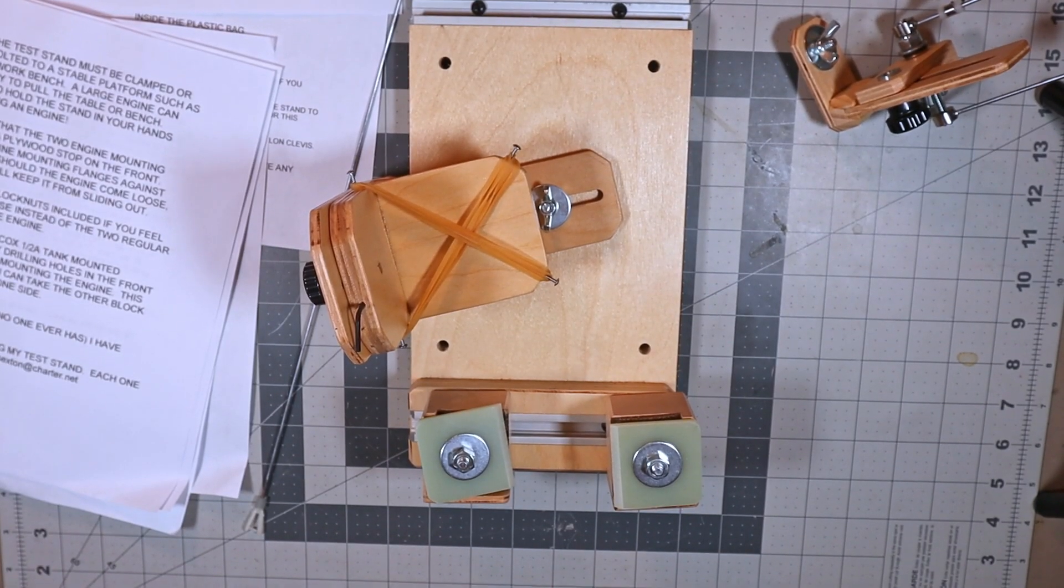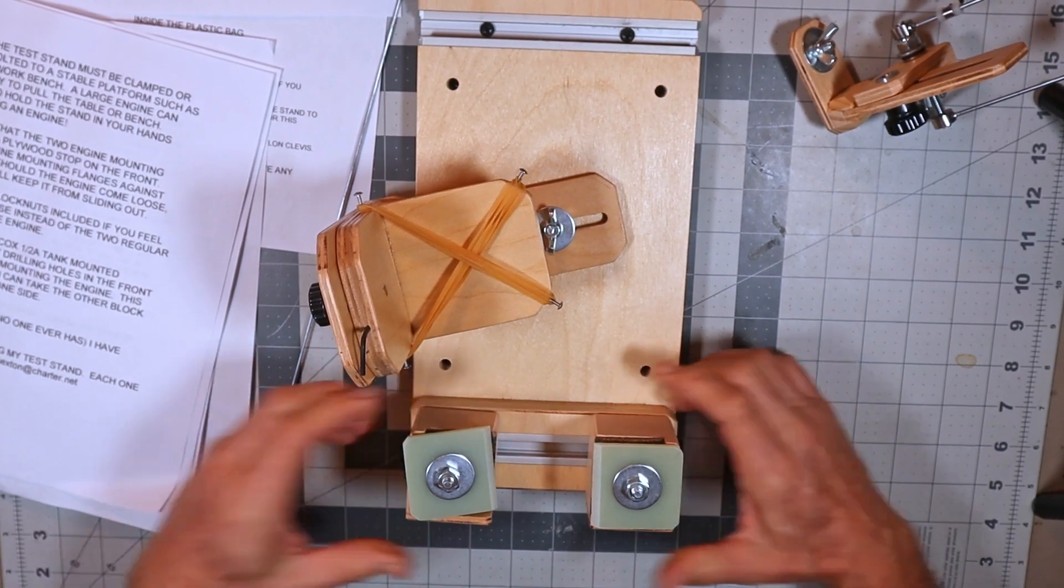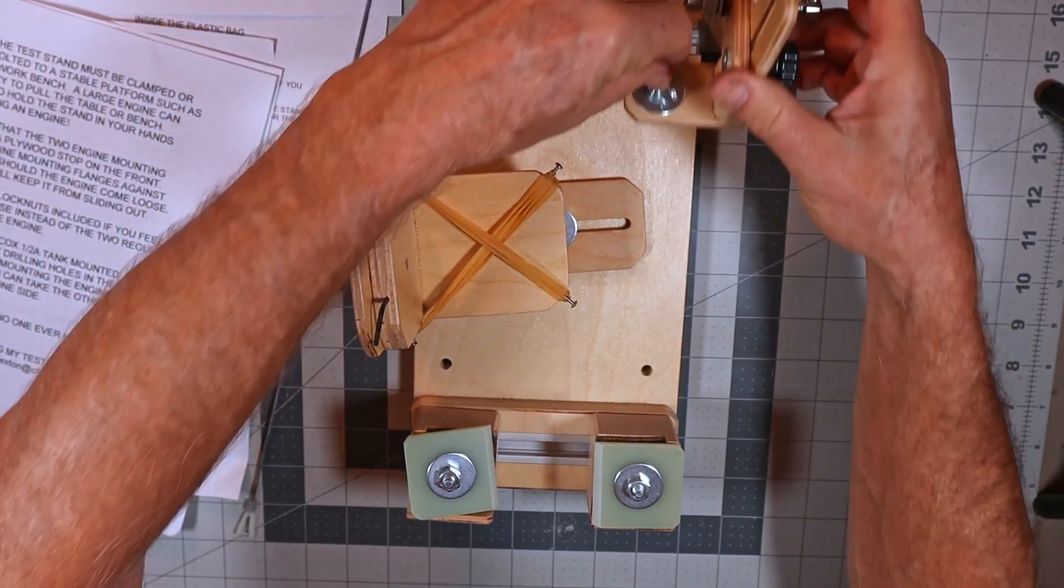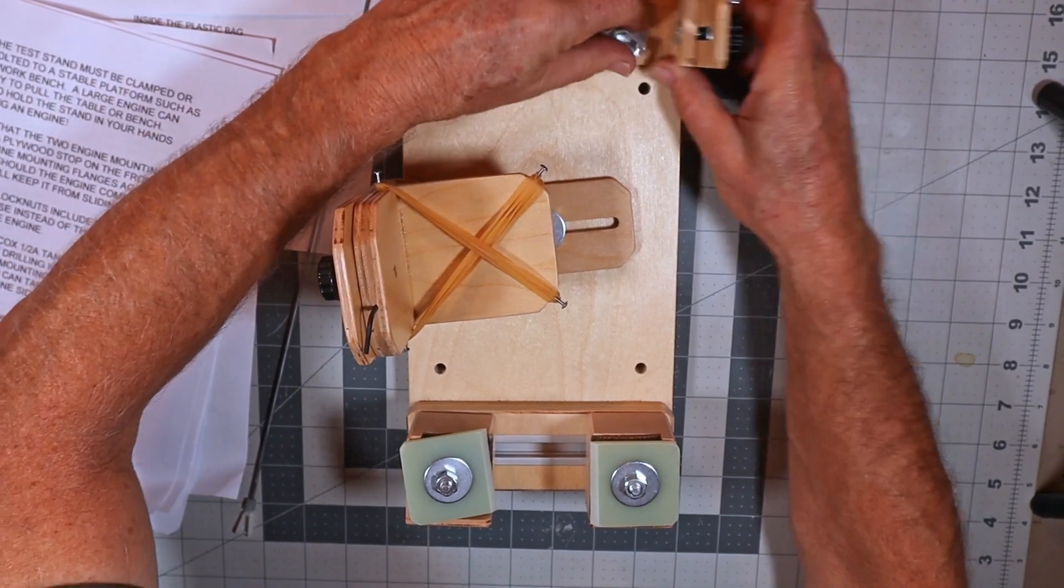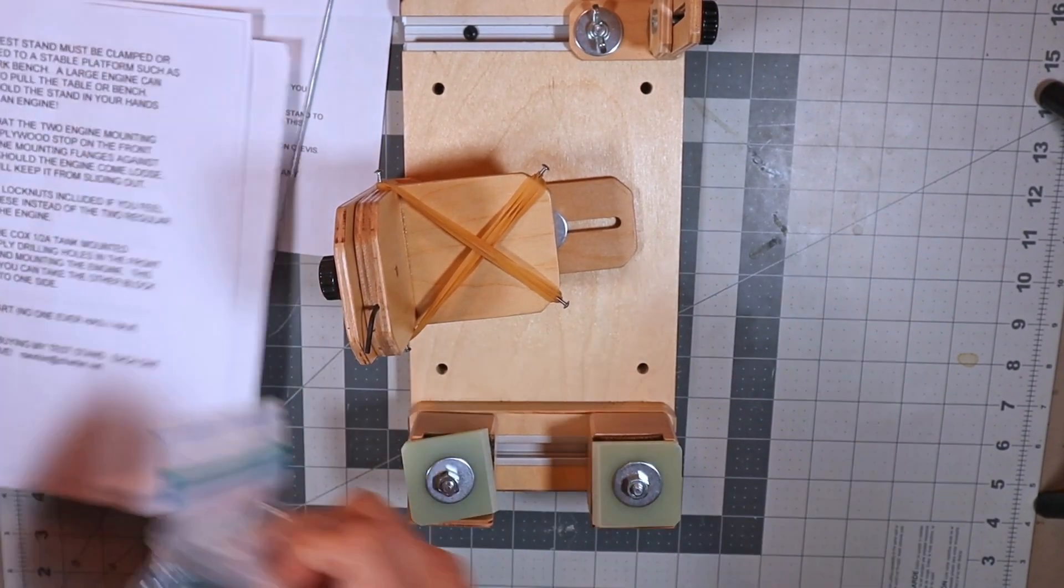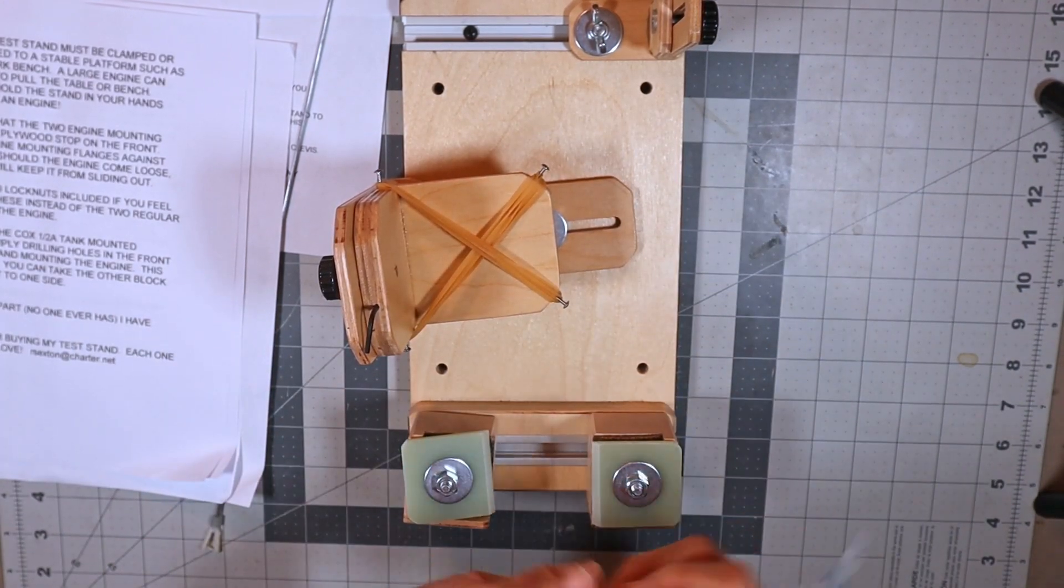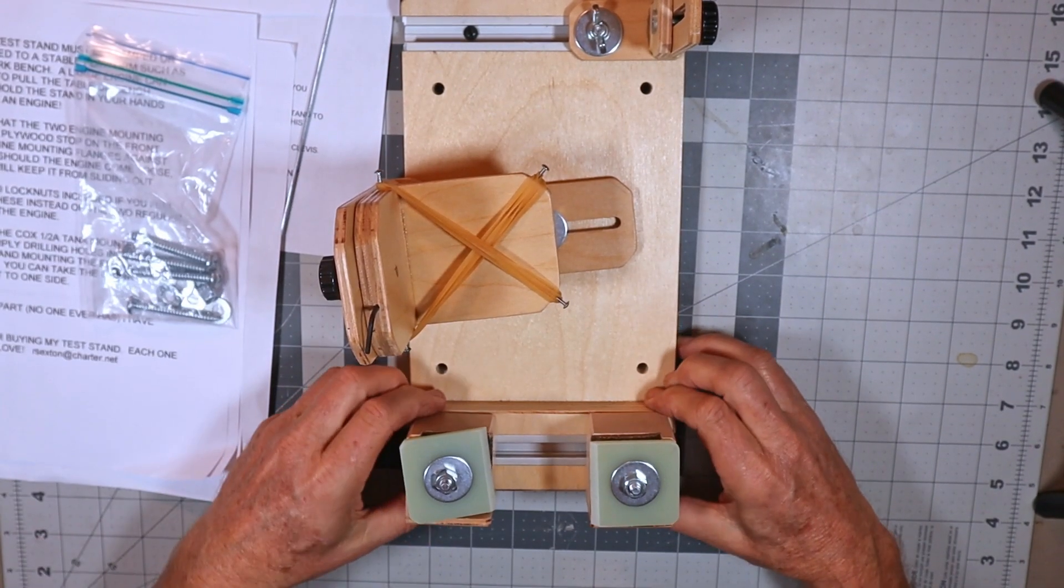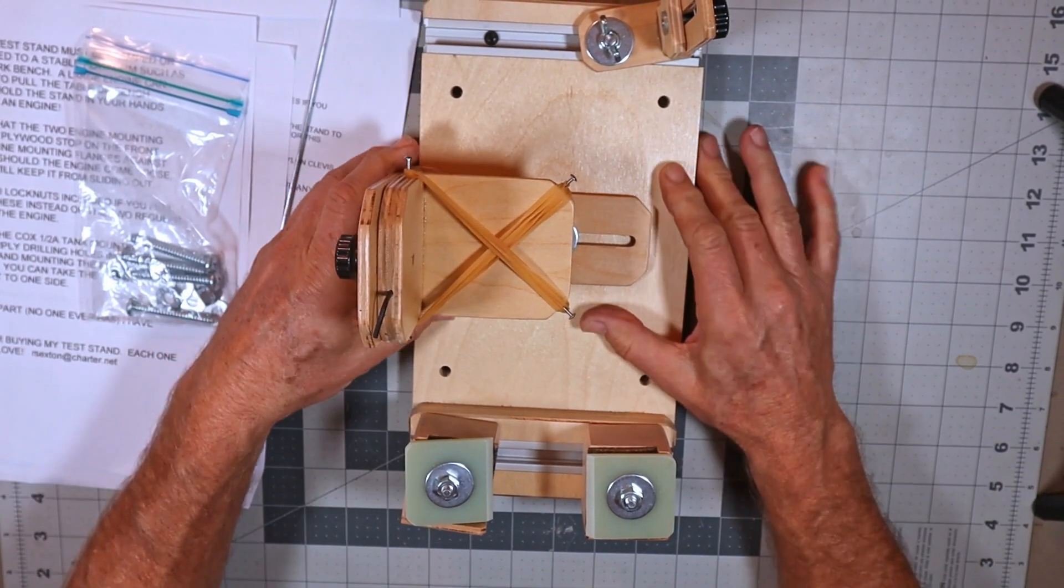But it does look like it's capable of it. I think when I choose to run that particular engine on this I am going to be a little bit hesitant. Ron has in this bag included lock nuts, which is one of the notes in there, to put on here just in case you don't feel comfortable with that. For that engine I might actually use those.